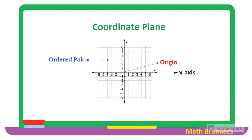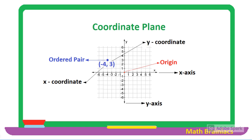Remember that the horizontal line on the coordinate plane is called the x-axis, and the vertical line is the y-axis. Ordered pairs are two numbers enclosed in parentheses — the first number is always the x-coordinate, while the second number is the y-coordinate.